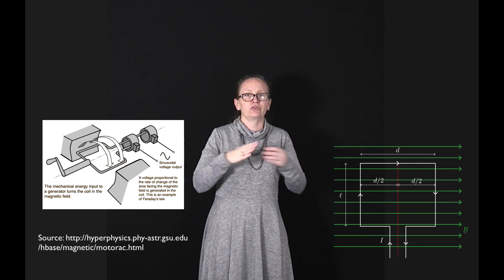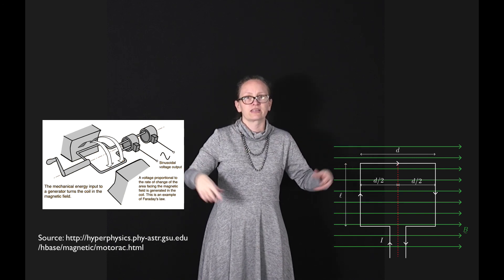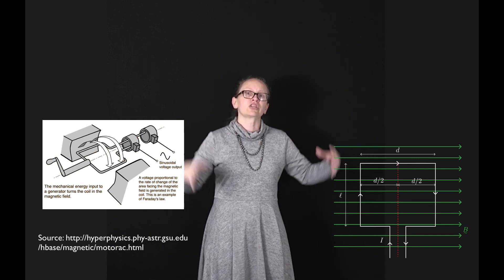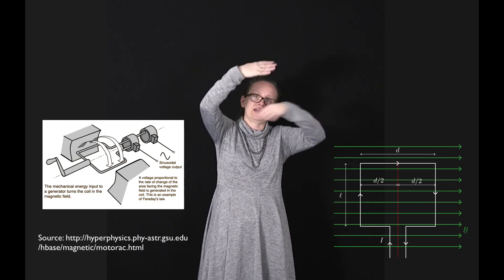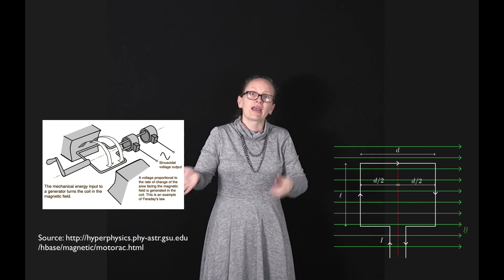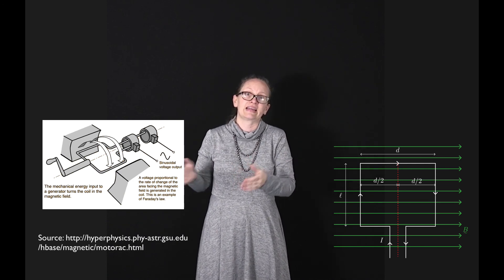Power plants essentially use some power source such as burning coal, which heats water. The water forms steam which starts a coil turning in a magnetic field, and this is how we get electrical energy from coal.